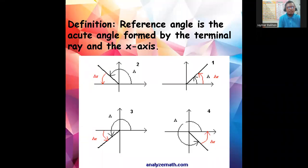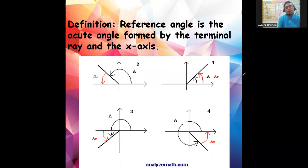In our previous lesson we discussed how to find the six trigonometric functions using the terminal point, and also how to find them using our fingers. Now we will look at how to find the six trigonometric functions of angles whose terminal point does not fall in quadrant one — for example, 225 degrees. In that case, we need to find the reference angle.